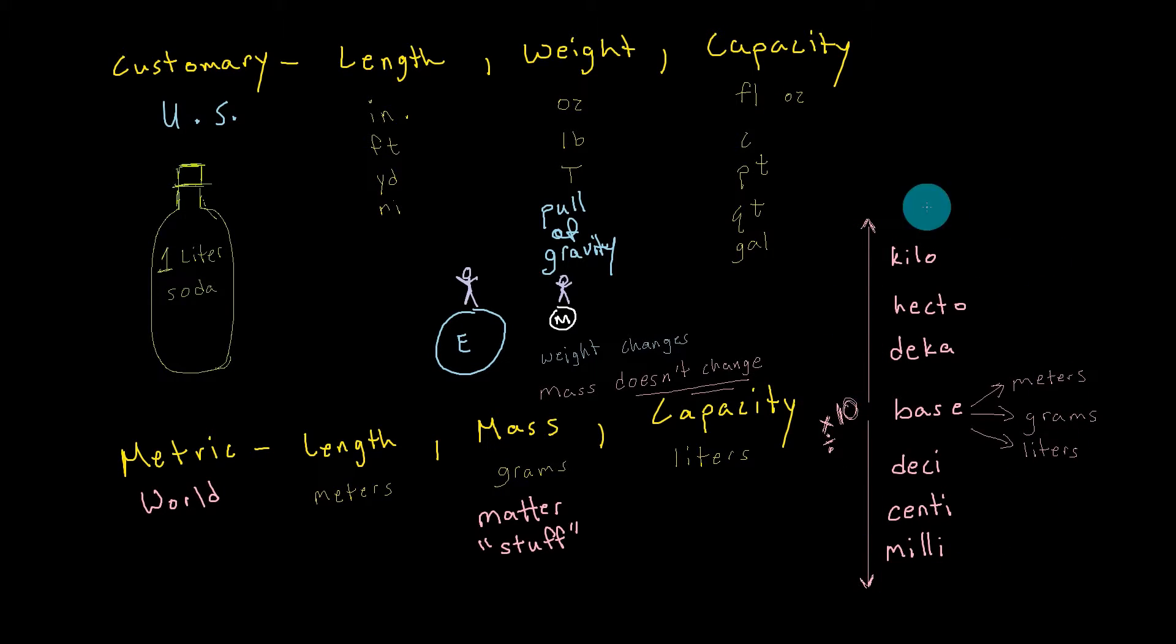We'll look more into conversions and converting between each set of units in future lessons. But let's go back to our earth and moon example, looking at the difference between weight and mass.